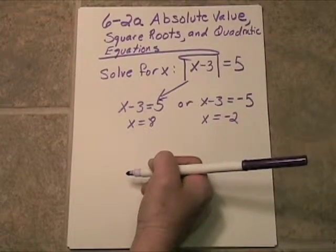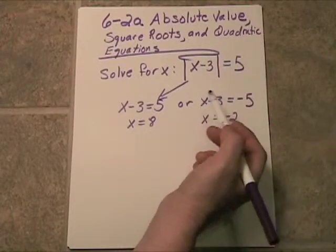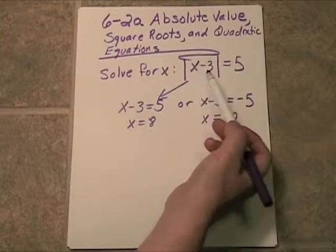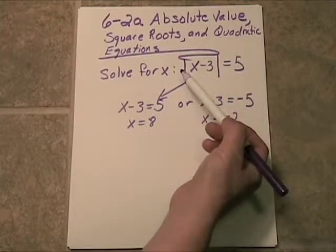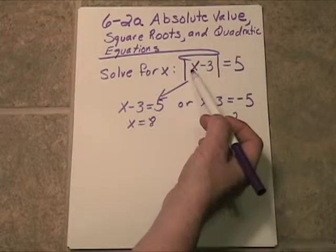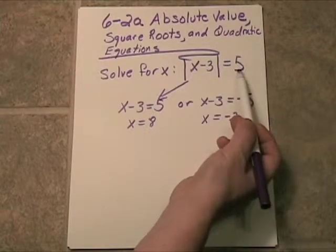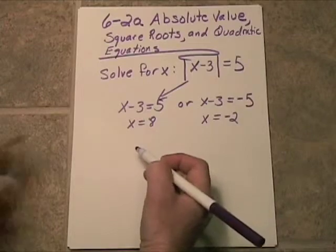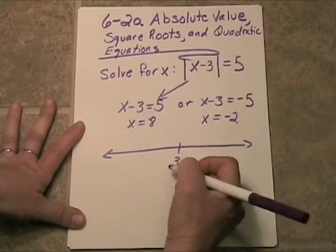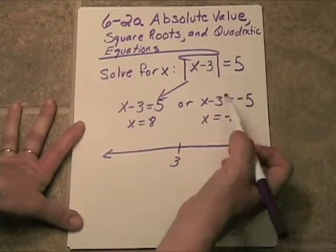Now this makes sense because of the distance formula. Take a look here. We've got some number and we're subtracting 3 and we're taking the absolute value. Remember that is the distance formula on a number line. So there's some number that is 5 units away from 3. Let's take a look at it on the number line. Let's say 3 is right here. The difference between our mystery number and the number 3 is 5.